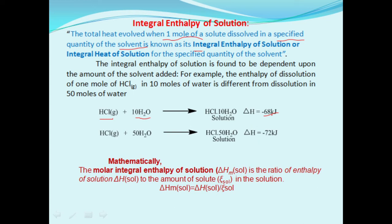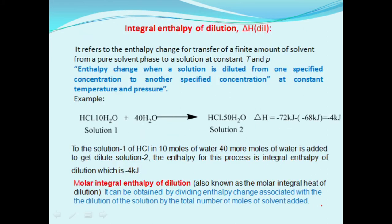So for 1 mole of solute in 10 moles of water, the enthalpy of solution is determined. If you take 50 moles of water, that will be a different integral enthalpy of solution — but the amount must always be specified. The molar integral enthalpy of solution is calculated as the total enthalpy of solution divided by the number of moles of solute dissolved. Both terms are essentially the same.